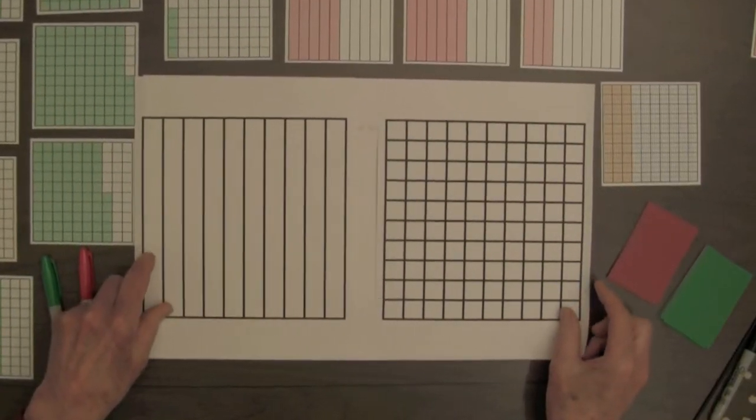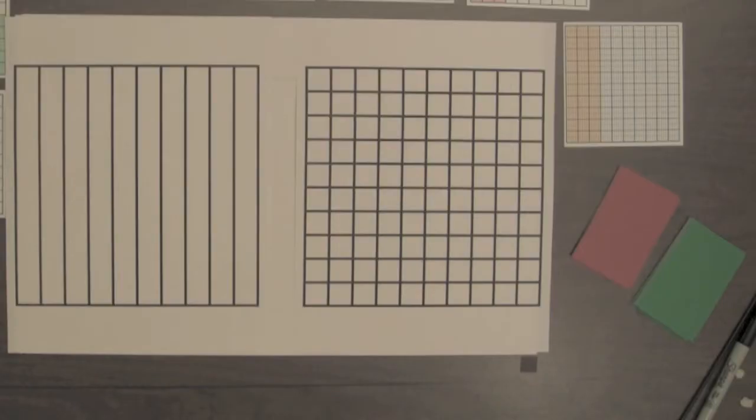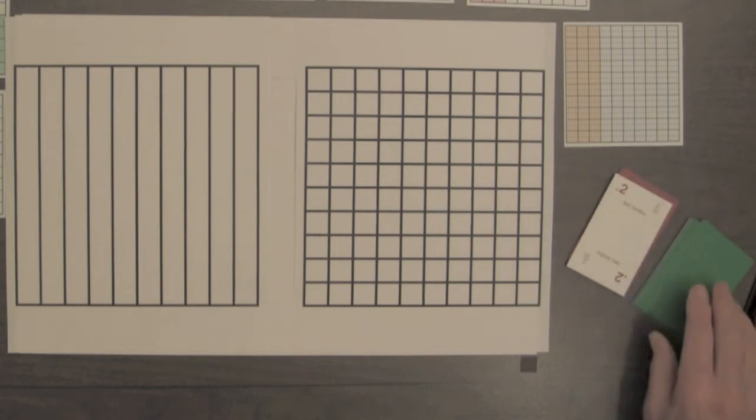Another activity for illustrating inequality of decimals is shading blank decimal squares. Students can be given a couple of decimals or they can select decimals from the decimal squares playing cards. They have two tenths, they have thirty-five hundredths.